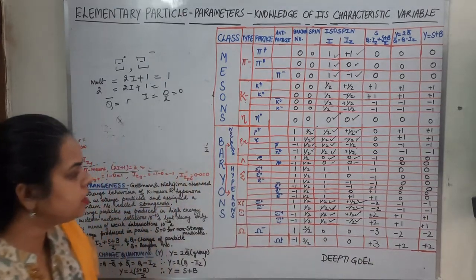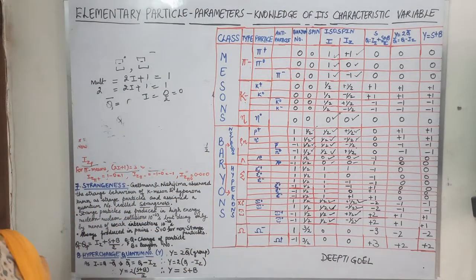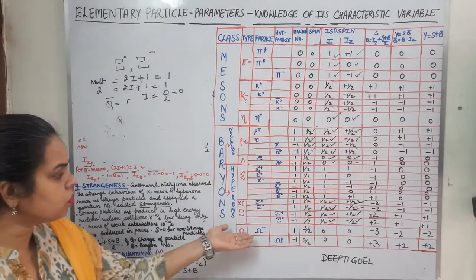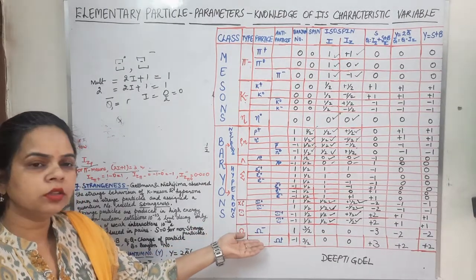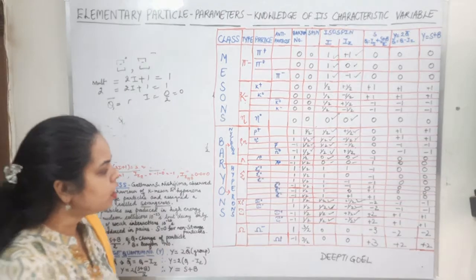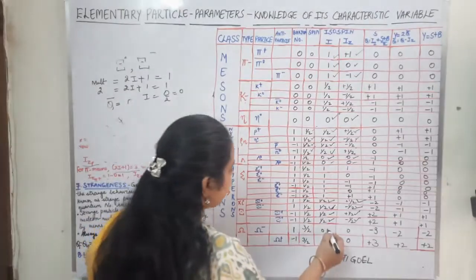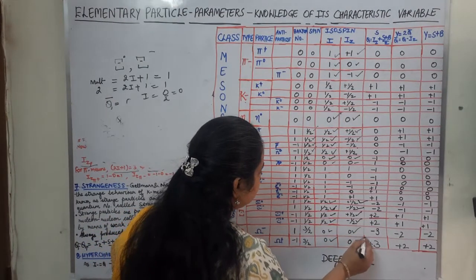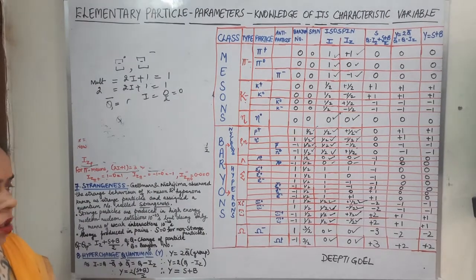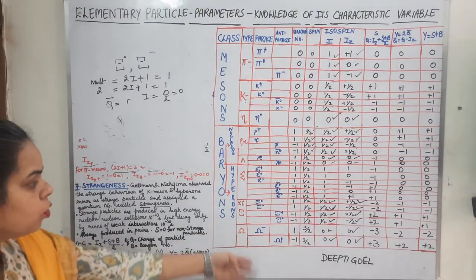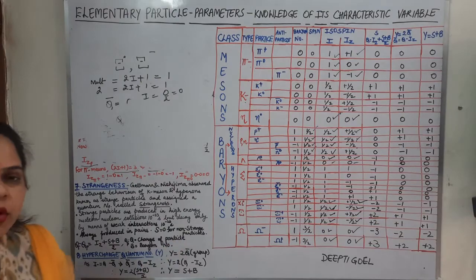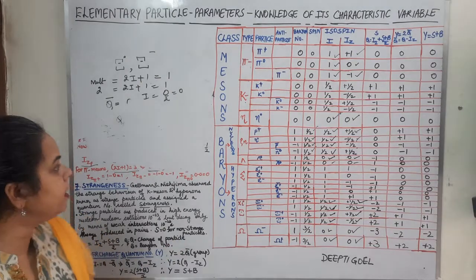For omega minus and omega plus, similarly the charge on the particle and the average charge cancel, so you again get the isotopic spin and the isospin values as 0 for omega minus and omega plus as well. In this way we have calculated the spin, isotopic spin, and isospin for all the cascade particles.